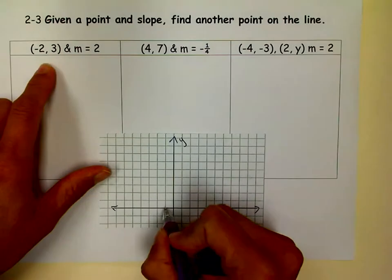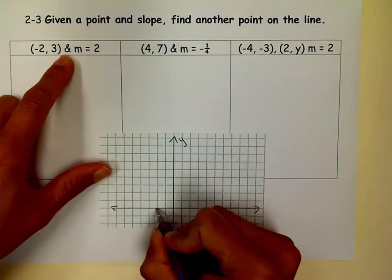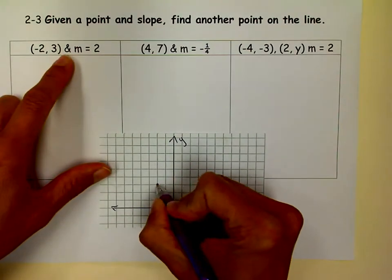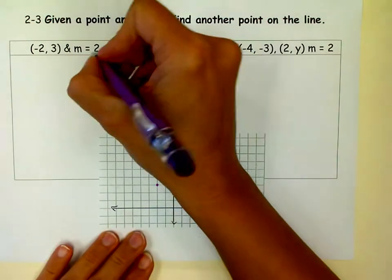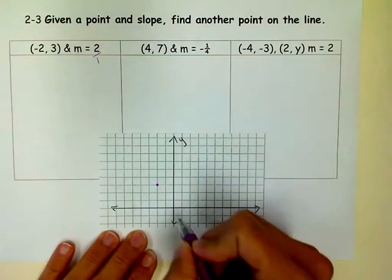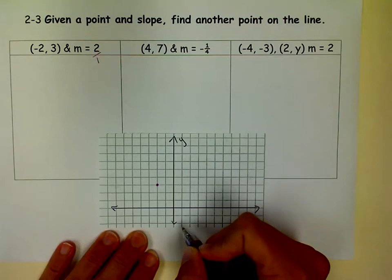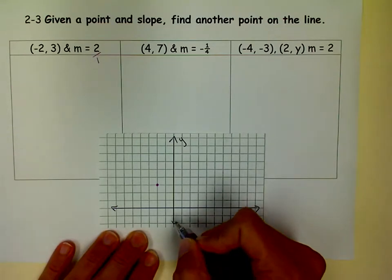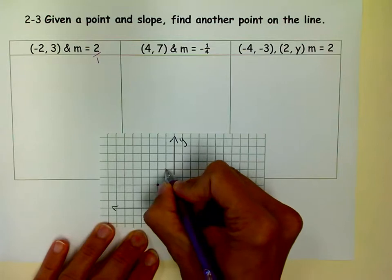So let's graph this point. Negative 2, 3, so I go left 2, up 3, and there's my point. My slope is 2. Remember that slope is rise over run. So that's 2 over 1, up 2, right 1. They're both positives, so I go up and right.